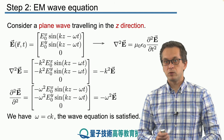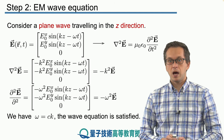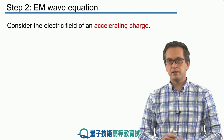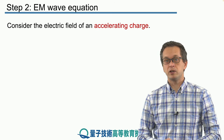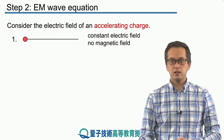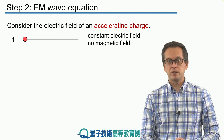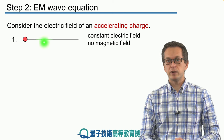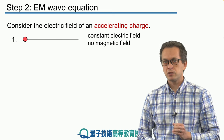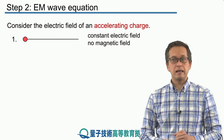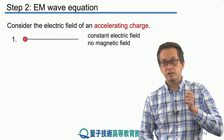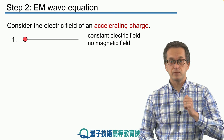Now we have to answer a very important question: how do we produce these electromagnetic waves? To answer that, we consider the electric field of an accelerating charge. Imagine the red ball represents our charge, and this line is one of its electric field lines. When the electric field is constant, there is no magnetic field — we know that from Maxwell's equations. When we displace the charge vertically by accelerating it upwards, it creates a kink in the electric field line.